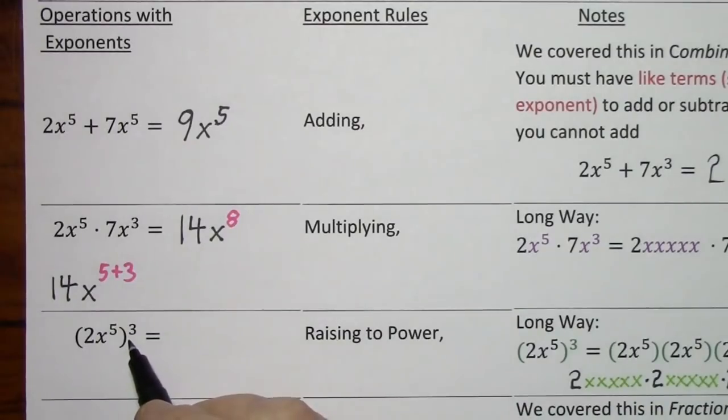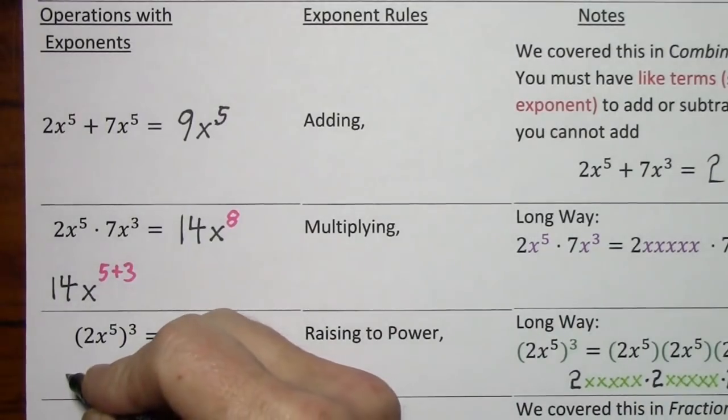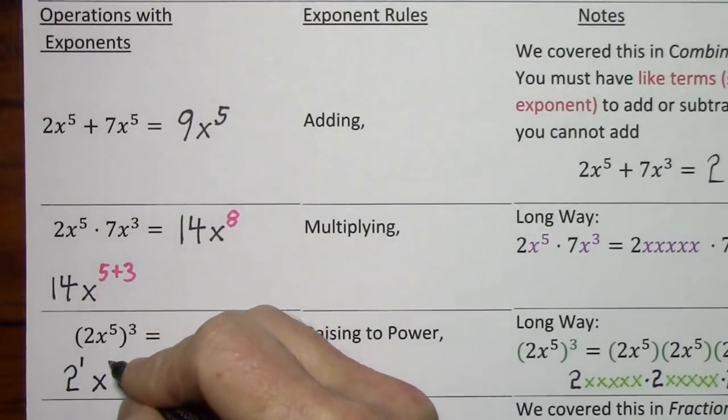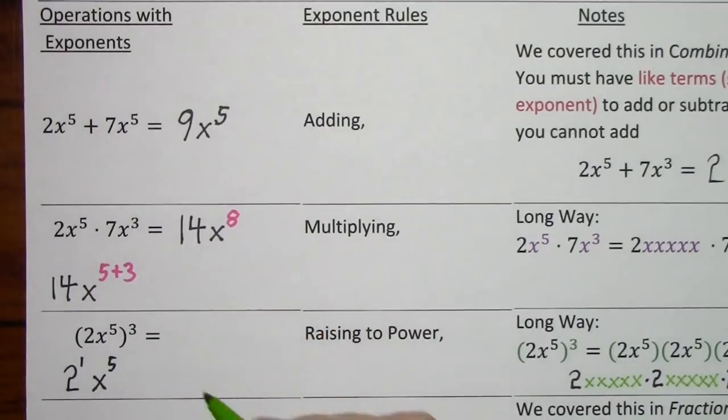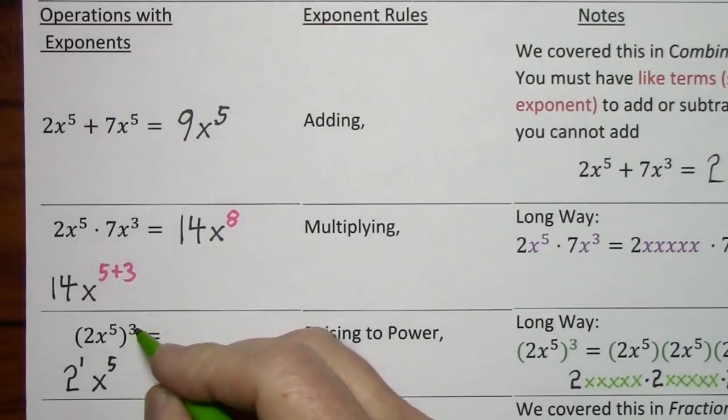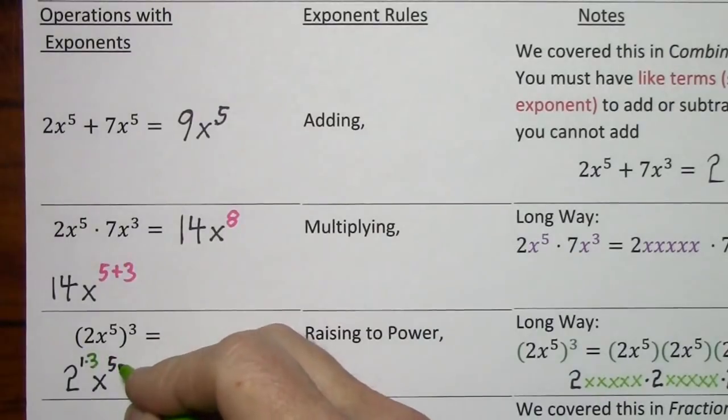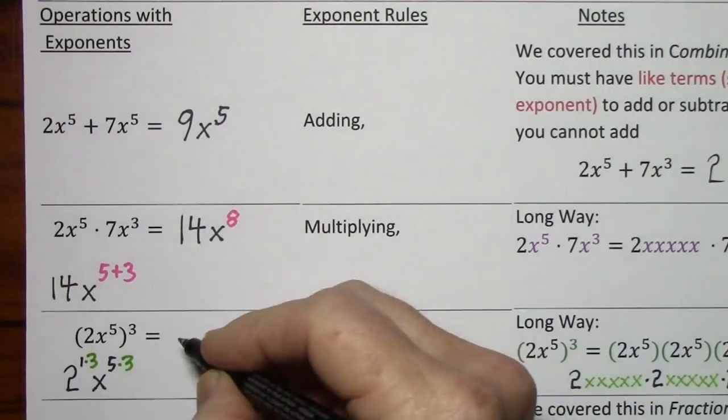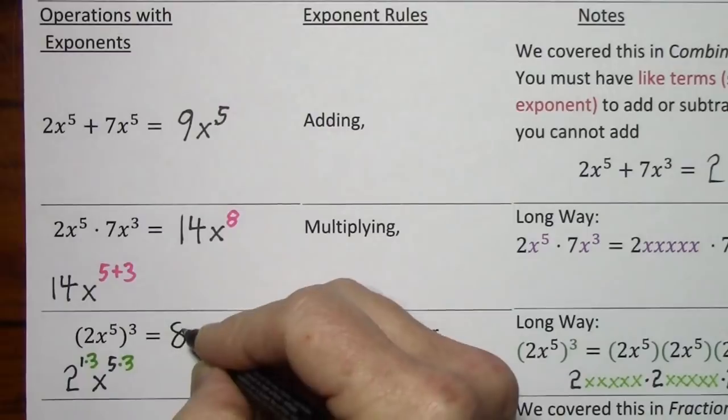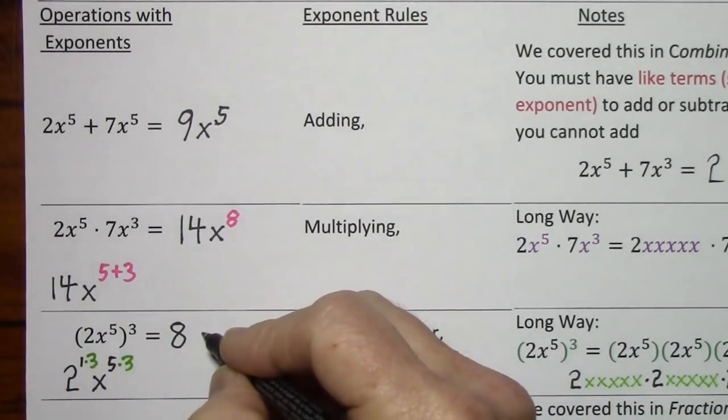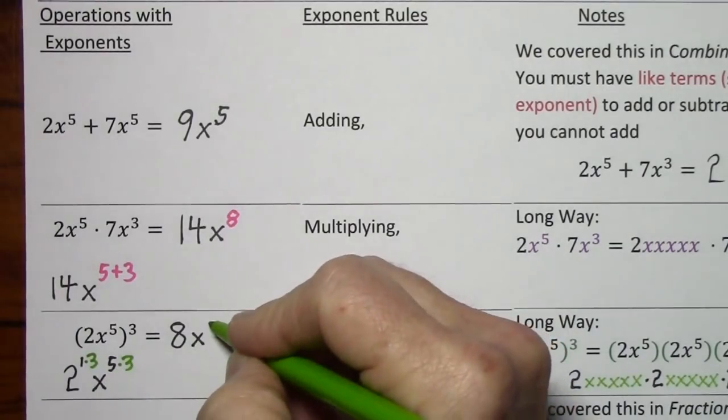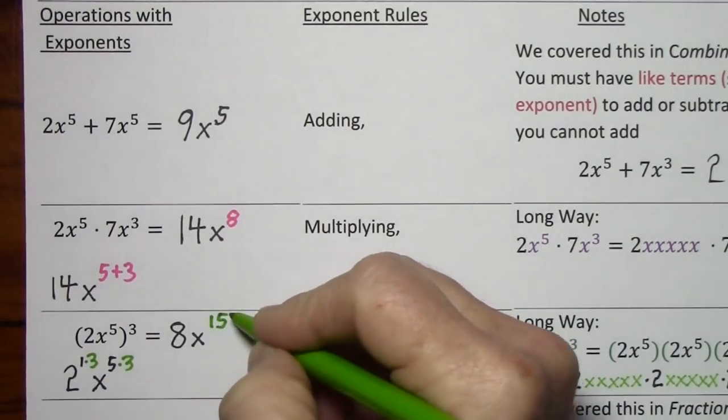Or you can use the power rule, which simply says when raising to a power, you multiply exponents. So 2, 1 times 3 is 3, so 2 to the third gives us 8. And then for x, 5 times 3 gives us 15.